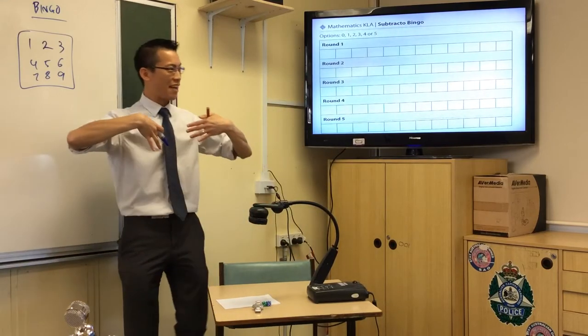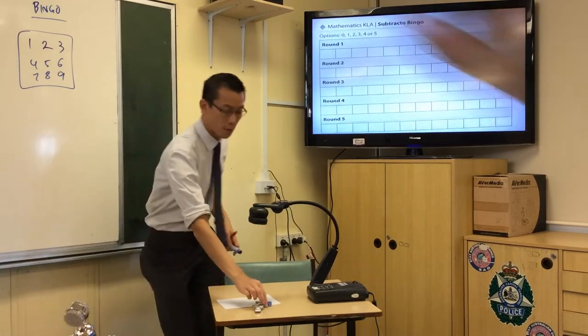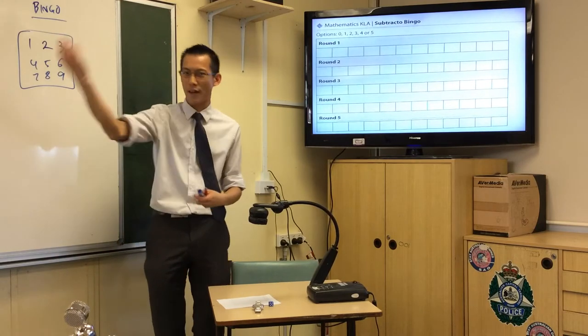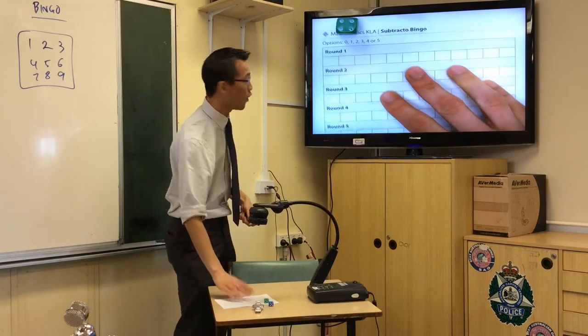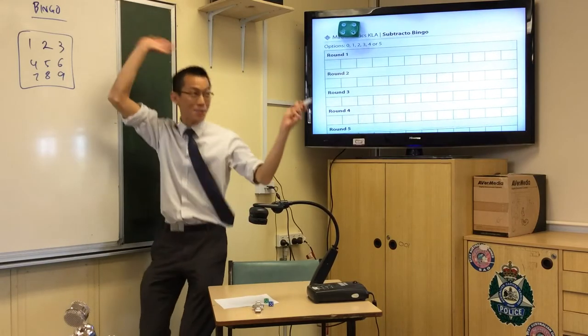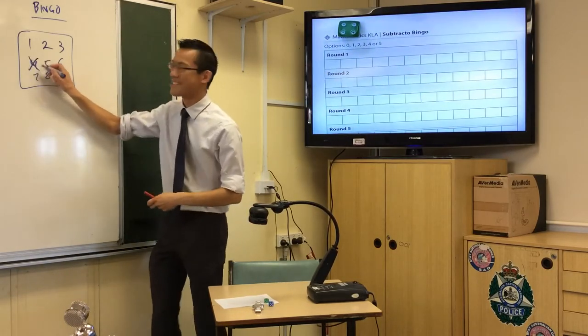And then the announcer at the front will call, we'll have dice or some other like drawing it out of a hat and we'll roll it and say, it's a four. And then if you're like, ooh, I've got a four, you get excited, you cross it out.